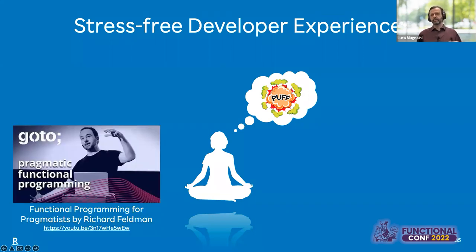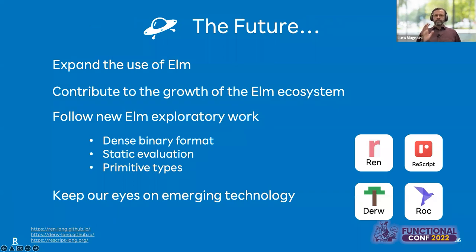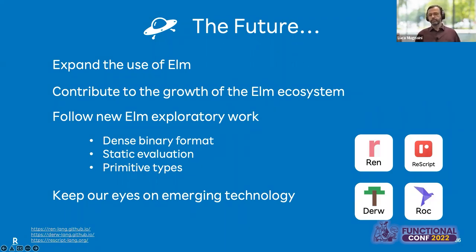If you're interested in this concept, have a look at the presentation 'Pragmatic Functional Programming' by Richard Feldman — he does a much better job of explaining it than me. About the future: we plan to expand the use of Elm and reduce the use of other languages whenever possible, as we would like all our code to be covered by the Elm guarantees. We will keep contributing to the growth of the Elm ecosystem and follow new progress on the compiler and core libraries. At the same time, we will keep our eyes on promising emerging technologies like Ren, ReScript, and others.